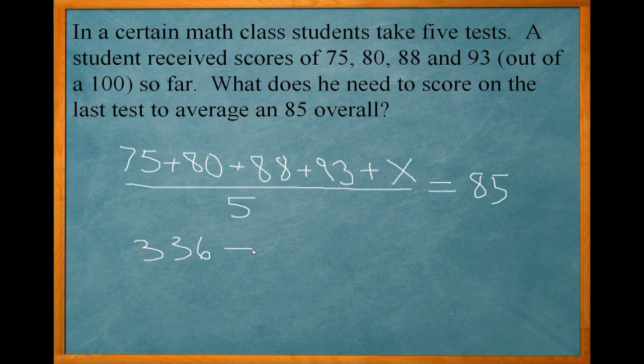Carry down the X. So 336 plus X divided by 5 equals 85.